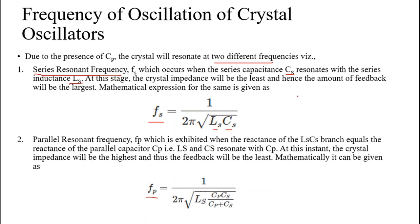For the parallel resonance frequency, you make the reactance of the series branch (R, L, C) equal to the reactance of the parallel capacitance Cp. The parallel resonance frequency formula is: fp = 1 / (2π √(Ls · (Cp·Cs)/(Cp+Cs))), where Cp is the parallel capacitance, Cs is the series capacitance, and Ls is the series inductance.